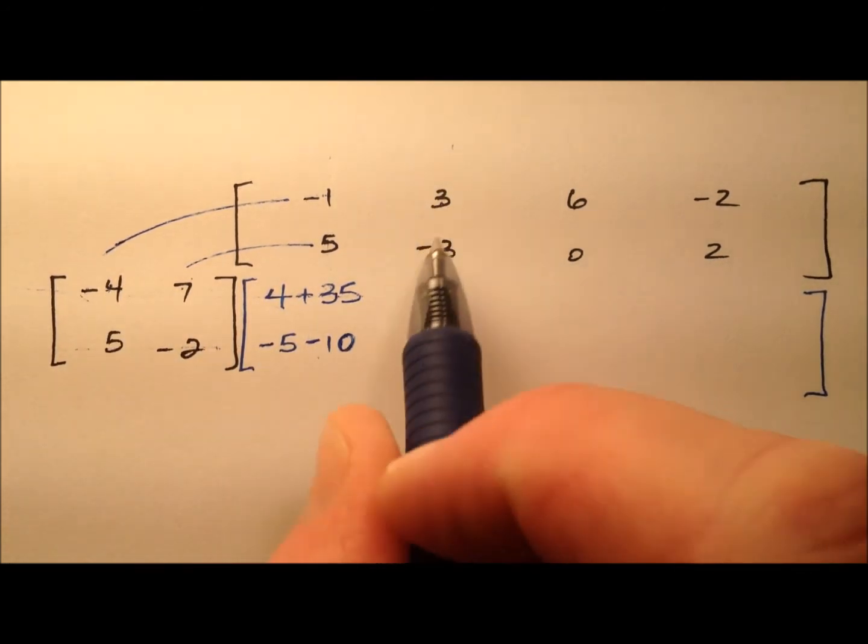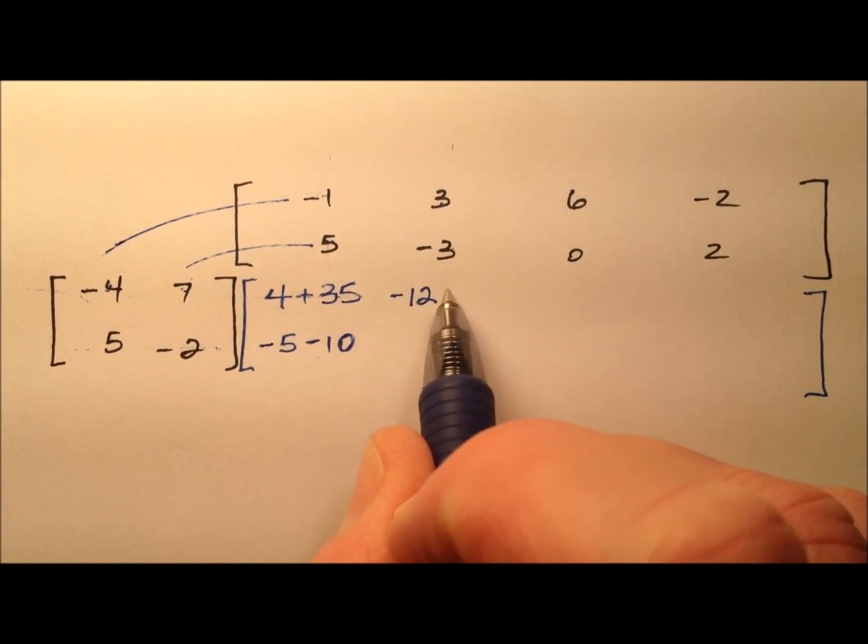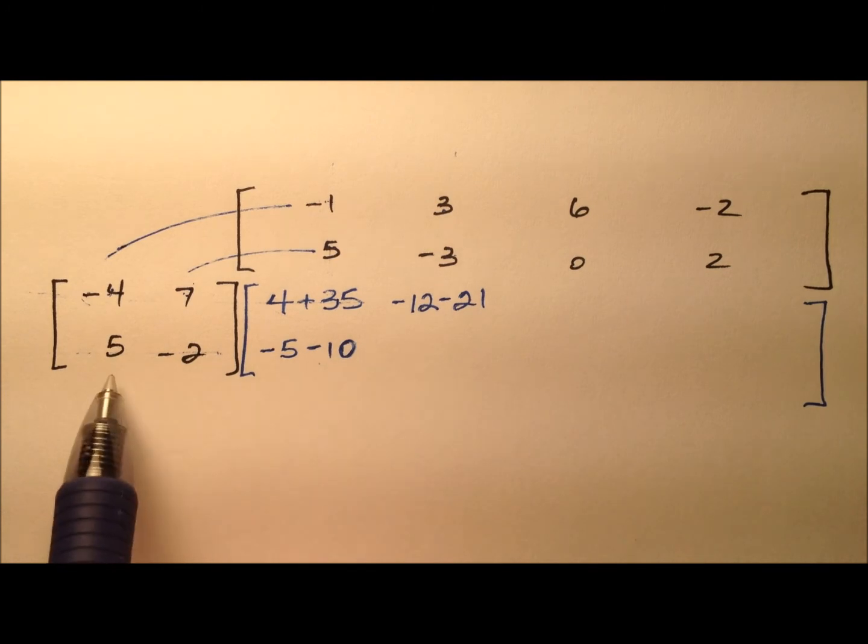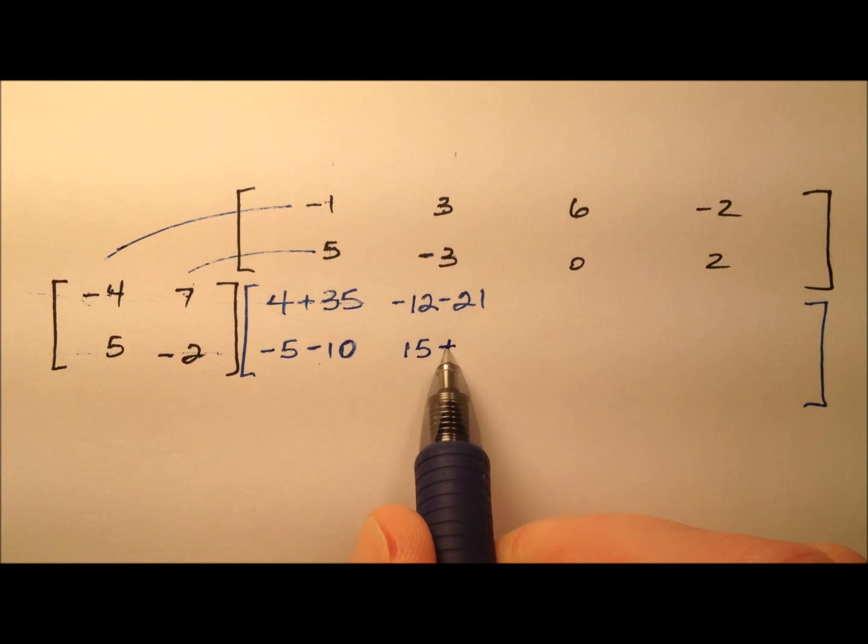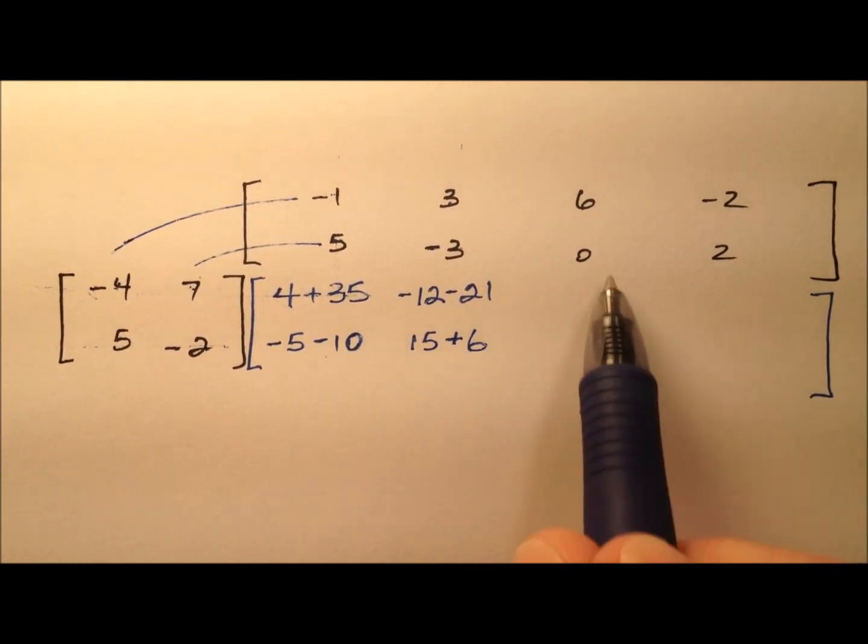So negative 4 times 3 will be negative 12, and 7 times negative 3 is negative 21. Okay, row 2, column 2, 5 times 3 is 15, and negative 2 and negative 3 will be positive 6. So you kind of see here the nice pattern.